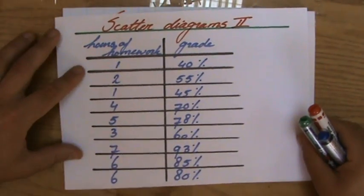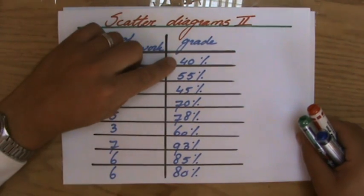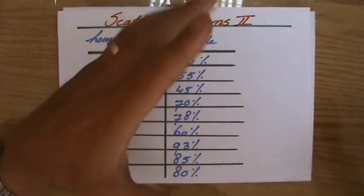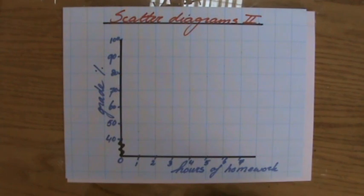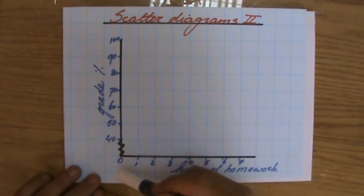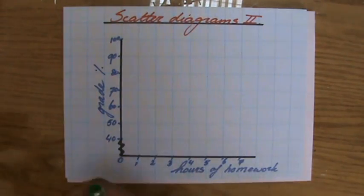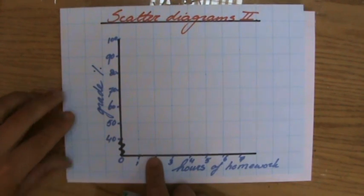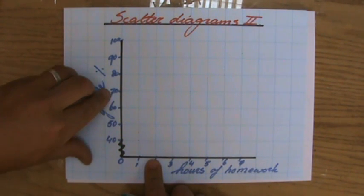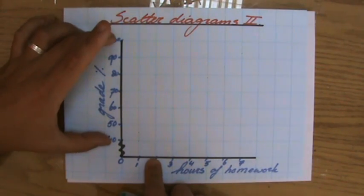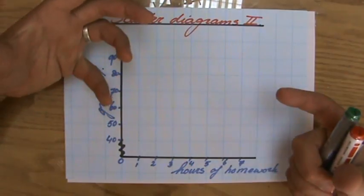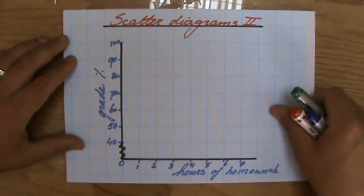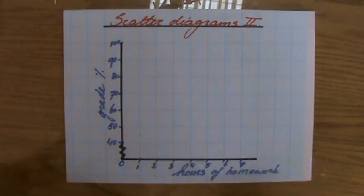And the grades, what is the lowest grade? That's 40%, and the highest is 93%. So it should go from 40 to, let's say, 95 or 100. That's why I broke the graph, because I'm not using anything between 0 and 40. Otherwise, I'm wasting all that space. I said that each centimeter is 10%, so I can fit exactly from 40 to 100 there. I want to use as much space as possible because that will increase the accuracy of my graph and make it easier to plot those points.